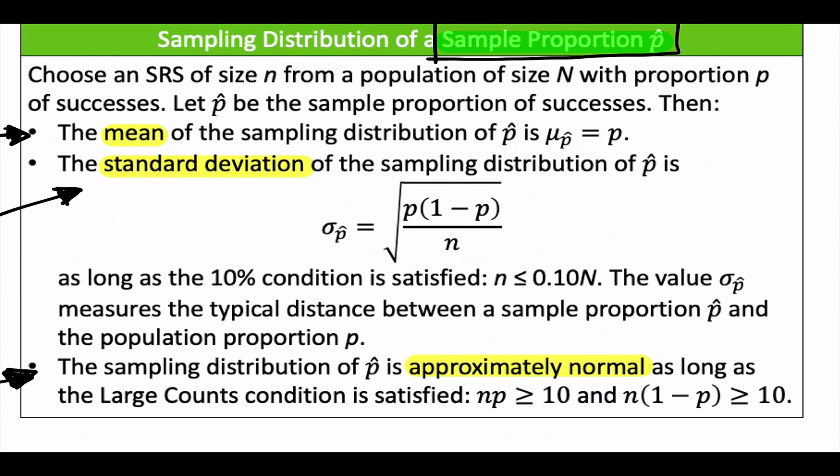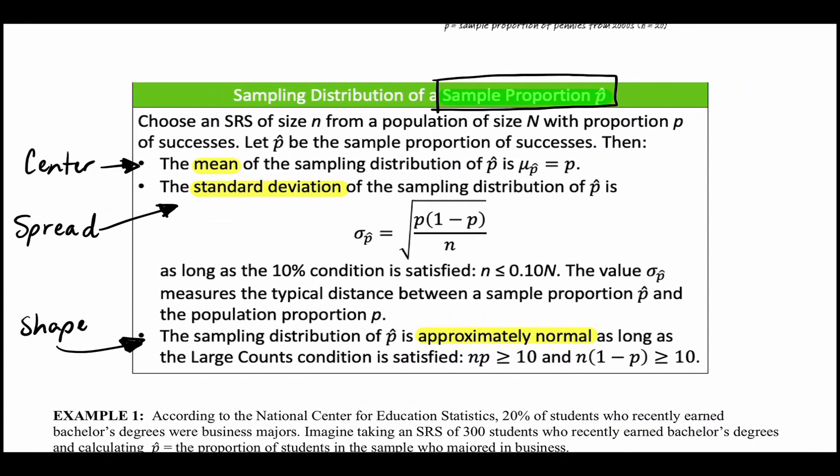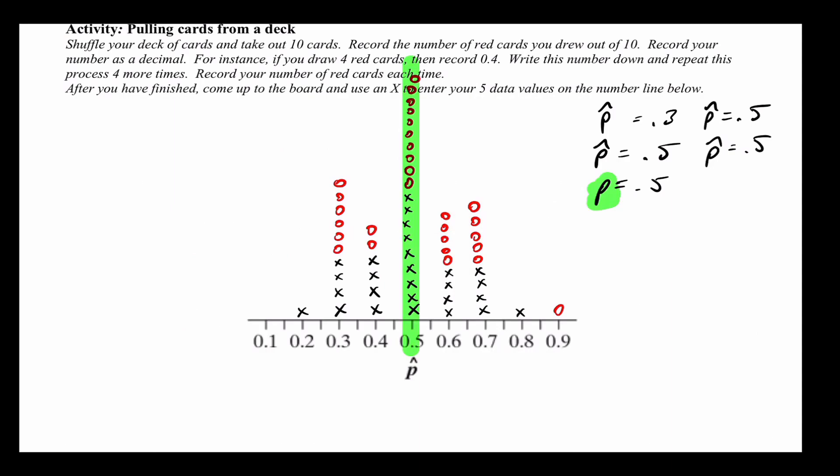The center is the mean — mean is a measure of center. The center is always going to be the true proportion P. P is the true proportion, what the answer actually is. So whatever the true answer is, that's what the center of the sampling distribution will be. The center would be 27.5 in that example. Just like we did here — the center was 0.5, and the true answer was 0.5.